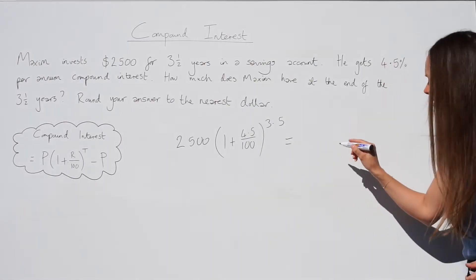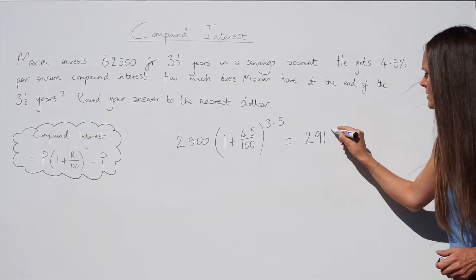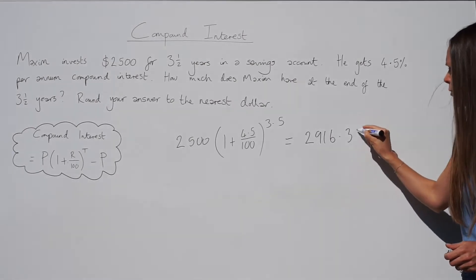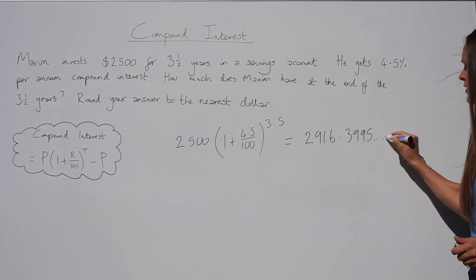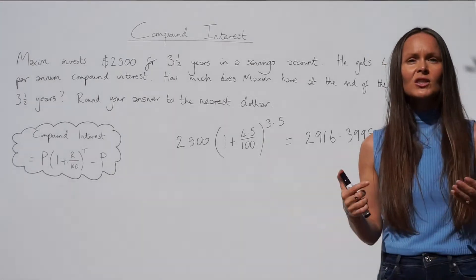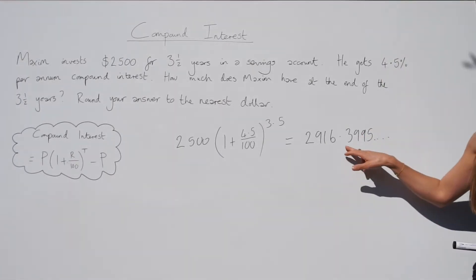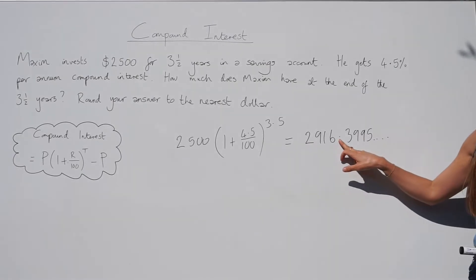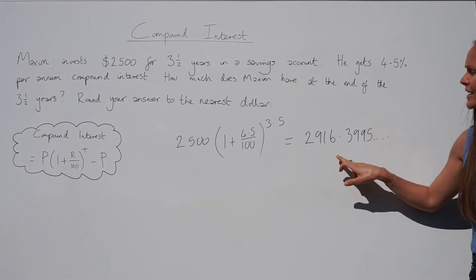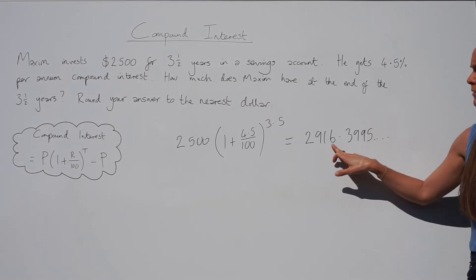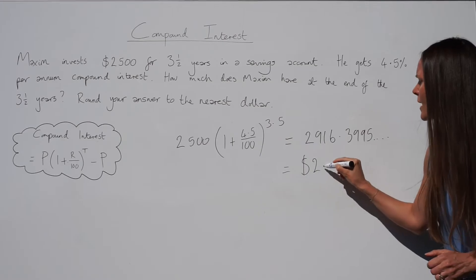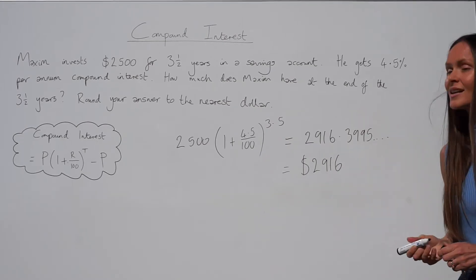When you put that into the calculator you should get 2916.3995 and so on. Because the question says round to the nearest dollar, we don't want any numbers after the decimal point. Since the digit 3 is smaller than five it doesn't round the 6 up, so we're left with $2,916.